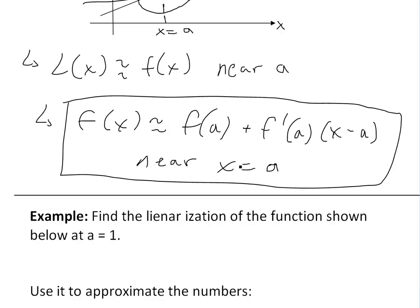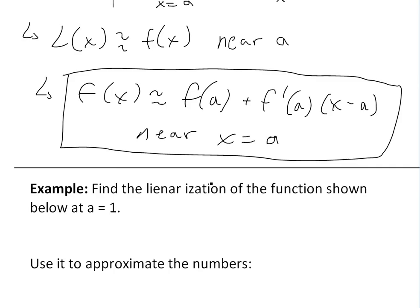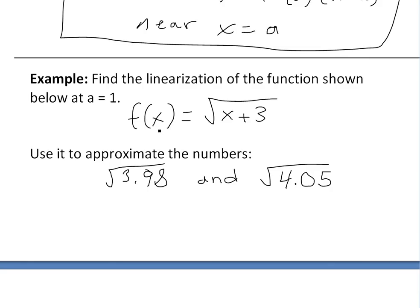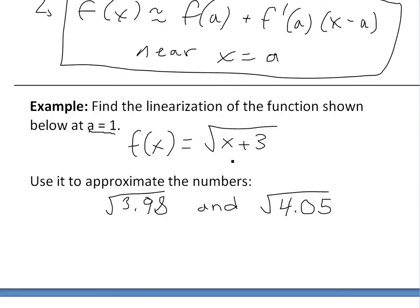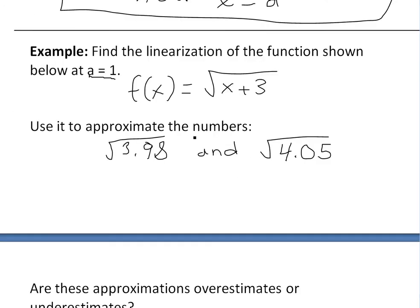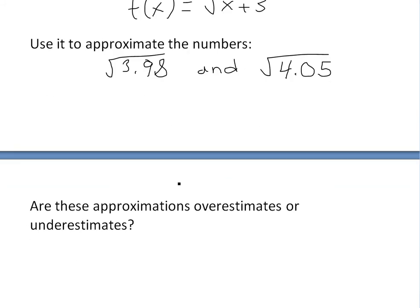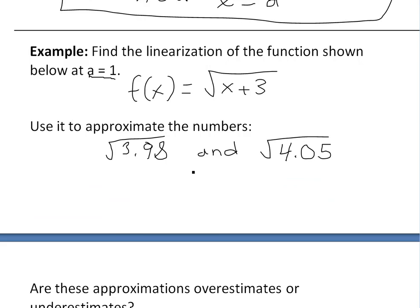To illustrate this, here's the example: find the linearization of the function f(x) = √(x+3) at a equals one, and use it to approximate 3.98 and 4.05. Also answer: are these approximations overestimates or underestimates?